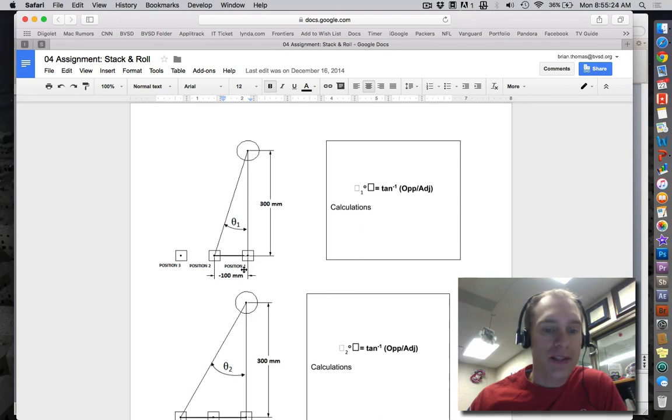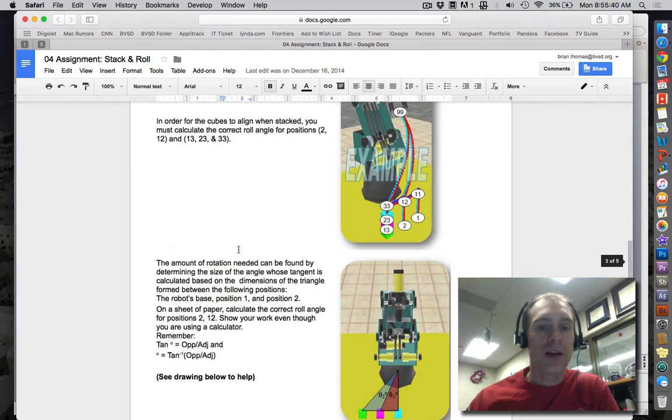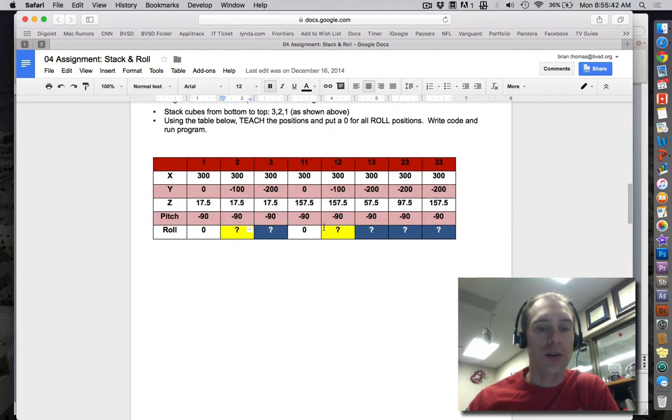From this angle, your opposite is negative 100. So in this situation, negative is to the left. Your adjacent is 300. So if you do inverse tangent of opposite over adjacent, then you're going to get that angle. And that is for position 2. That's the angle that goes to position 2. So that's, again, what you type in under 2 and 12.